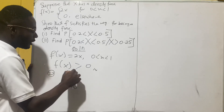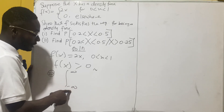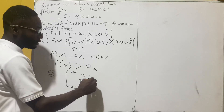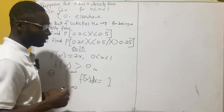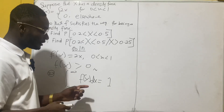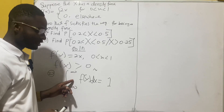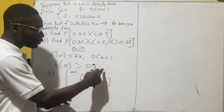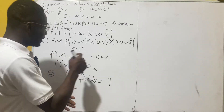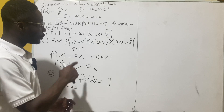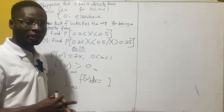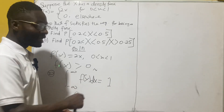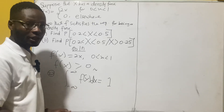The second condition is that when you integrate from negative infinity to positive infinity of the function, the total should be equal to positive one. So if these two conditions hold, then you can say that f(x) = 2x satisfies the condition for being a probability density function. We know the first one holds, so let's check if the second one will work.